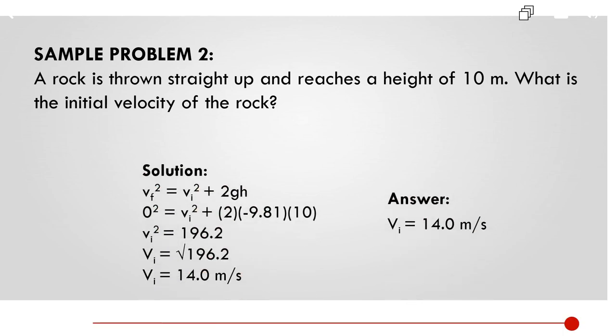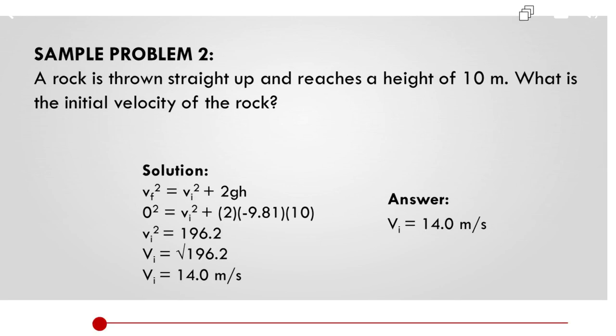Solving this problem, we're now going to substitute the given values to the equation. 0 squared is equals to initial velocity squared plus 2 times the gravity, which is negative 9.81 times 10, which is the height. Now we have an initial velocity squared of 196.2. Square rooting this equation, we're now leading to an initial velocity of 14.0 meter per second. So the initial velocity of the rock is 14.0 meter per second.